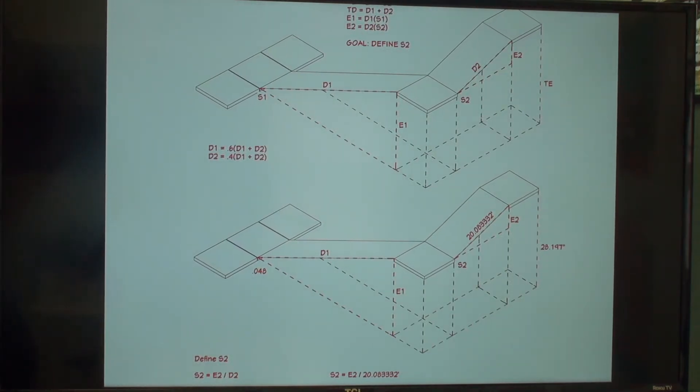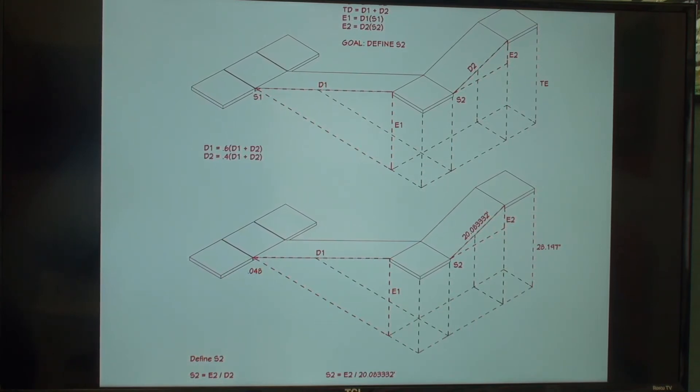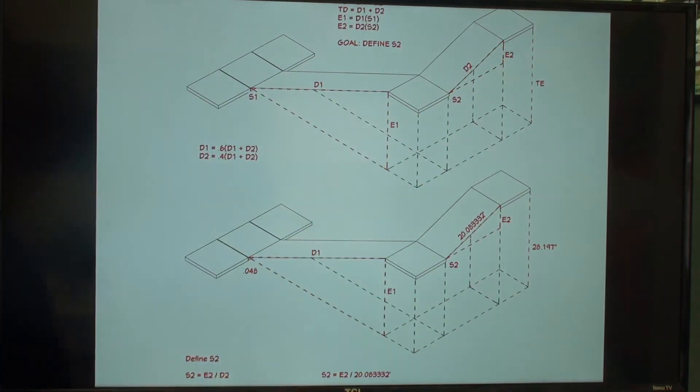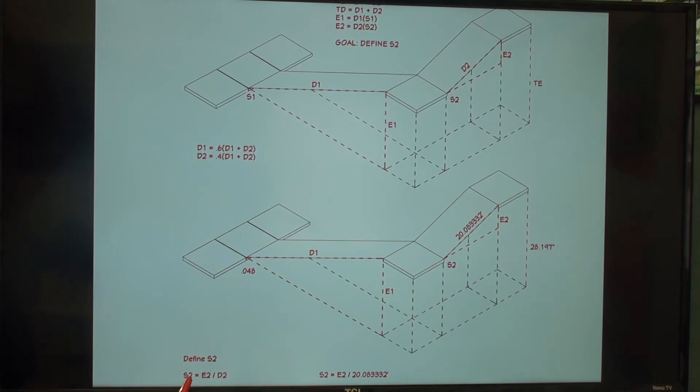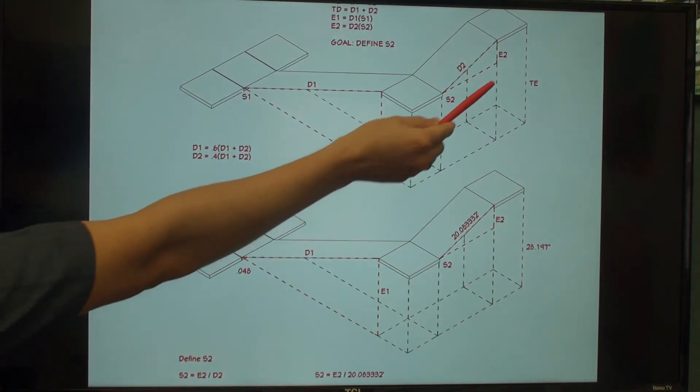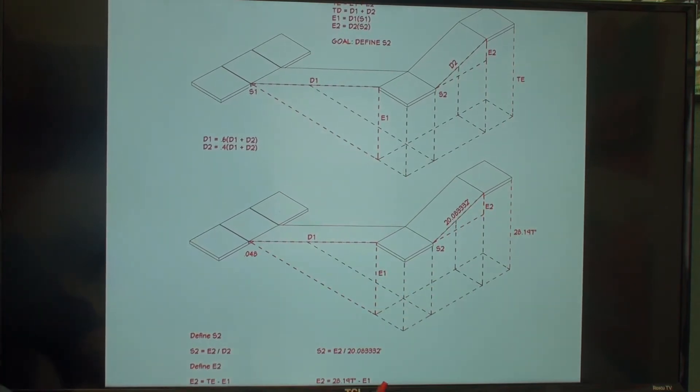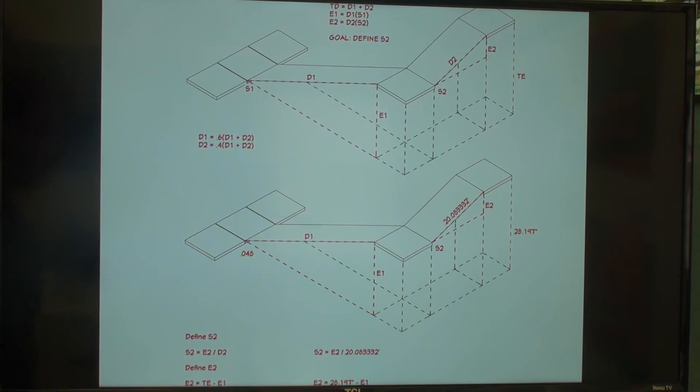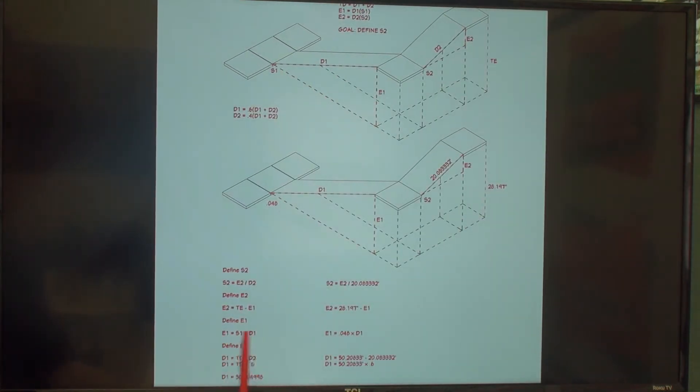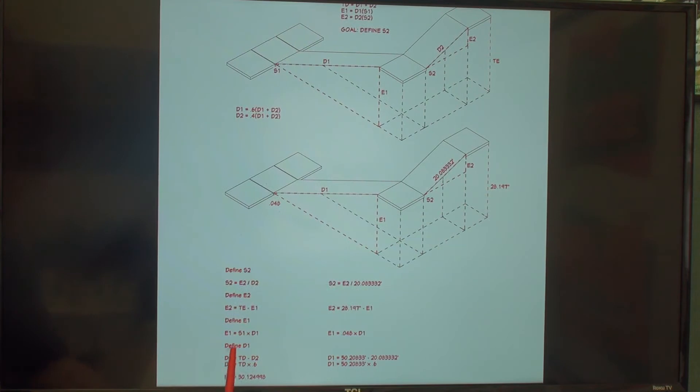To illustrate this problem, I have made a diagram depicting all of the variables and all of the numbers we need to know. Our goal is to determine the slope of the last four panels here. And below, I have provided the equation needed to solve that. But as I said before, we cannot solve it without knowing the elevation here at E2. Now we are trying to define E2, which we can only do by subtracting the elevation change of the first six panels from the total elevation. But now we need to know E1, which we already know can be found by multiplying the length of the six panels by the slope. Finally, we have gotten to an equation we can solve.